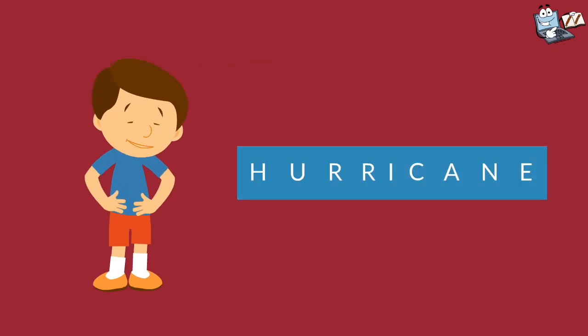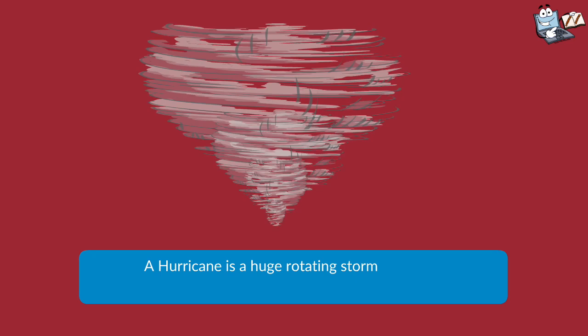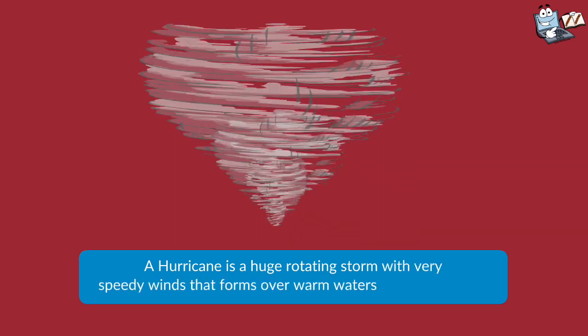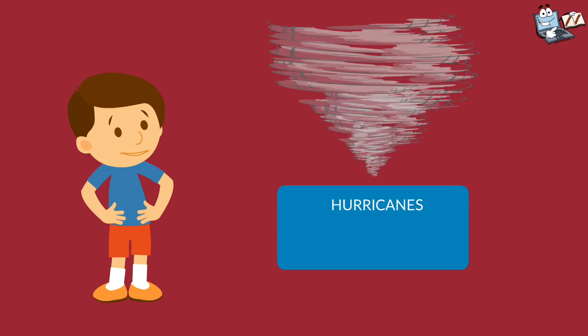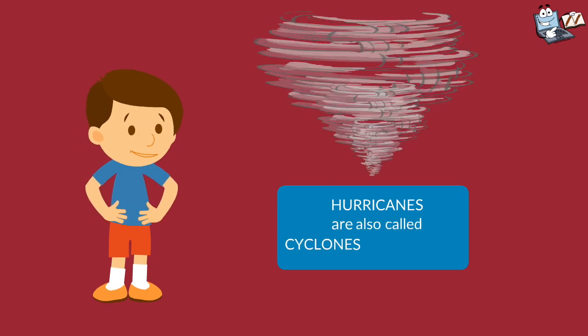Today, we'll learn about hurricanes. A hurricane is a huge rotating storm with very speedy winds that forms over warm water in tropical areas. Hurricanes are also called cyclones or typhoons.